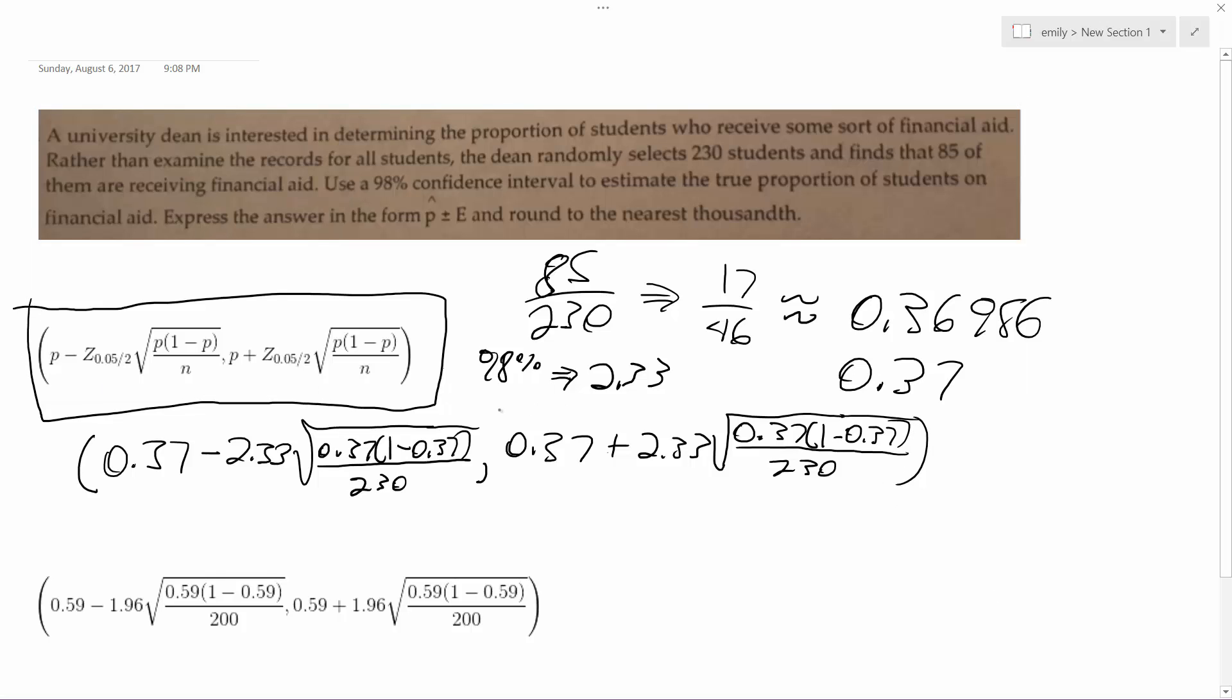So this ends up being approximately 0.2958, so 0.296, and our right distribution is 0.444176, so just 0.444.